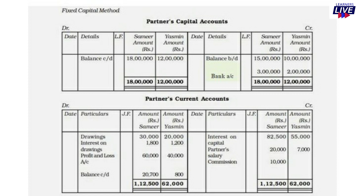The opening capital is Rs. 15,00,000 and Rs. 10,00,000. The balance is brought down: Rs. 15,000 and Rs. 10,000. We introduce the additional capital — the capital accounts are credited. Bank account: Rs. 3,00,000 and Rs. 2,00,000. The balance of our partners' accounts: Rs. 18,00,000 and Rs. 12,00,000.